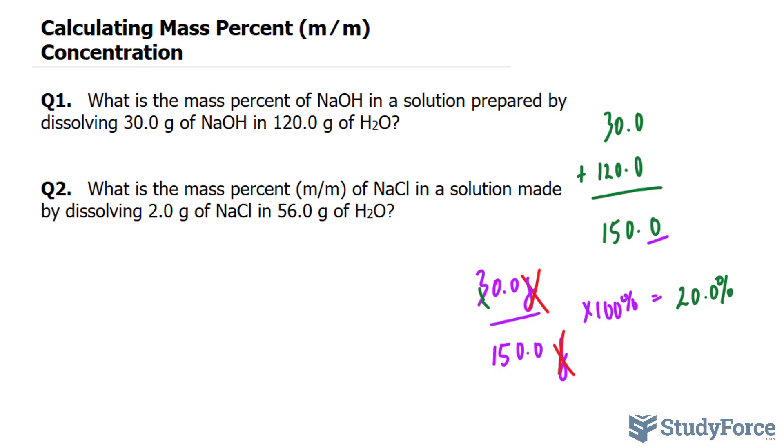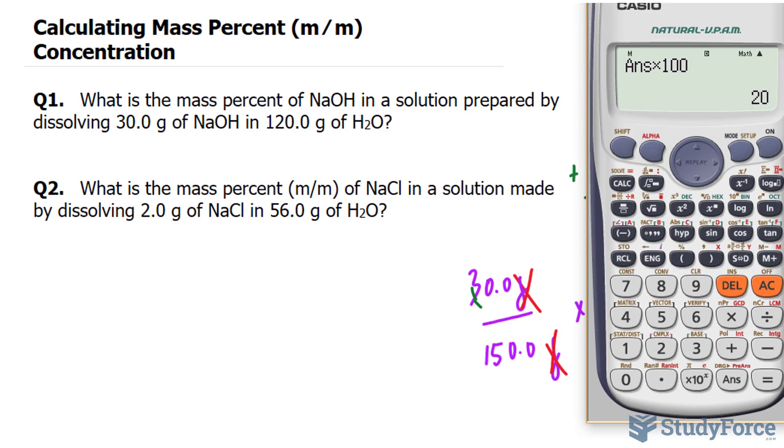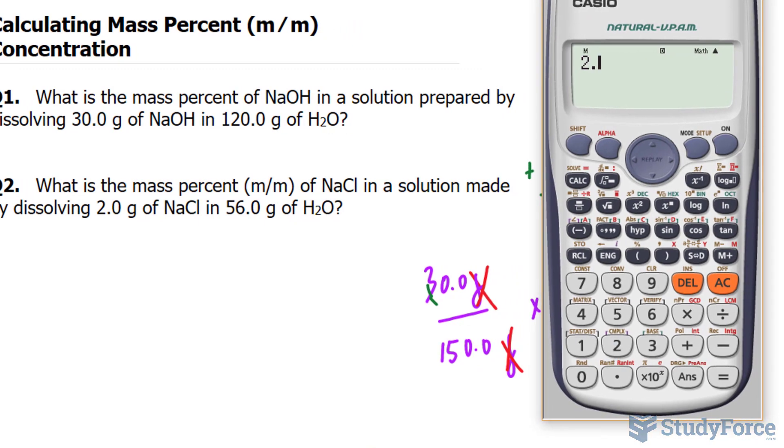Let's just do it really quickly. What is the mass percent of NaCl in a solution made by dissolving 2.0 grams of NaCl in 56.0 grams of water? So let me just show you what to do. You'll take 2.0 plus 56, that's the total, 2.0 divided by that total.